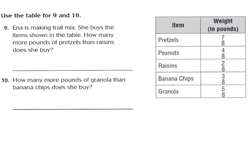For question number nine, it says Ina is making trail mix. She buys the items shown in the table. How many more pounds of pretzels than raisins does she buy? The clue words 'how many more than' let me know I need to subtract. We're looking for pretzels, which is seven-eighths, minus raisins, which is two-eighths. So my question is seven-eighths minus two-eighths. Go ahead and write your answer on your line.